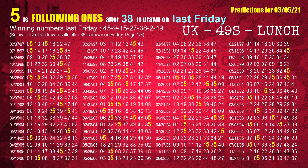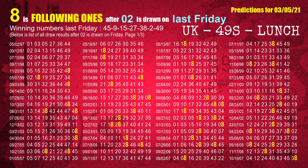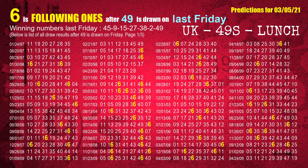The fifth winning number last Friday is 38. The most frequently following units digit is 5 when 38 is the winning number on last Friday. The sixth winning number last Friday is 02. The most frequently following units digit is 8 when 02 is the winning number on last Friday. The booster winning number last Friday is 49. The most frequently following units digit is 6 when 49 is the winning number on last Friday.